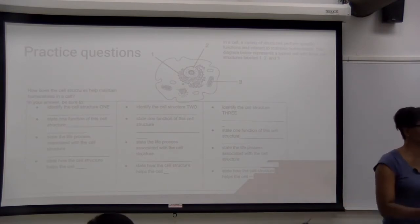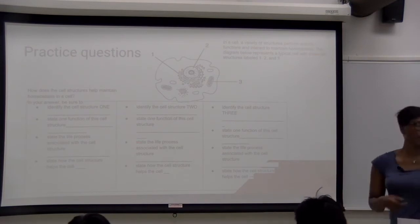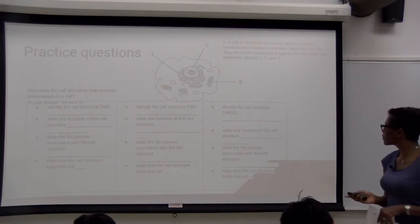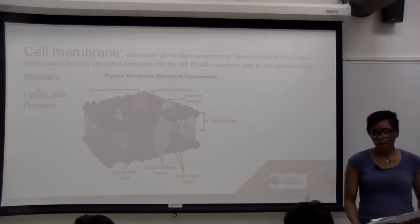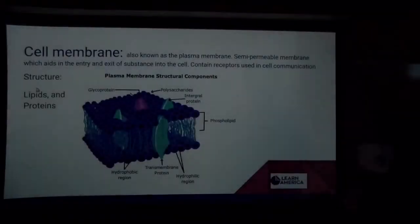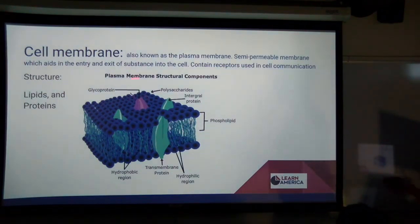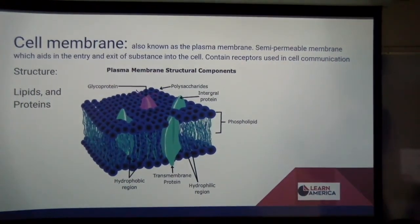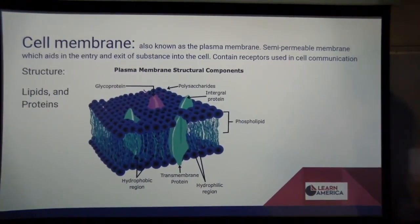The life process associated with the nucleus is regulation. Now let's look at our first cell structure on our journey through the cell — the cell membrane, also called the plasma membrane. When you see 'plasma membrane' and 'cell membrane,' they're referring to the same thing. We're now on page three.